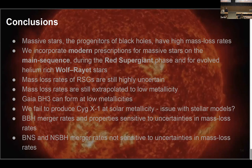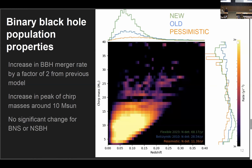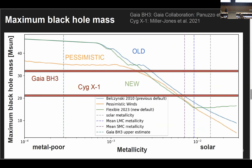Question: Could Cygnus X1 have accreted more mass from a more complicated system — like if it was originally a triple? Response: This is probably not the best way to show this because Cygnus X1 is clearly a binary, so binary interaction is probably important in determining the black hole mass. The black hole mass is believed to be close to the natal mass because it's hard to accrete a significant amount. There's no suggestion it was a triple, and there's probably no way we would know.